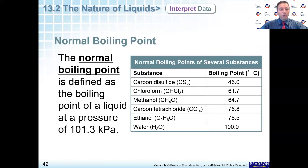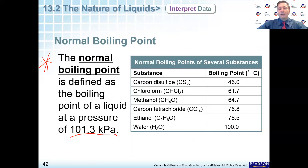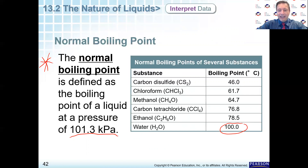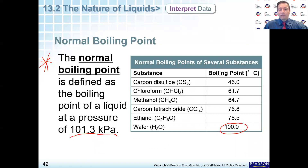Normal boiling point — please get this into your notes. Normal boiling point is at 101.3 kilopascals, or 1.0 atmospheres. Here is the normal boiling point of some substances. Water, which we're very familiar with, is 100 degrees Celsius. You may wonder why it is so high — remember the hydrogen bonding that takes place. That is the attraction of hydrogen to the unshared electron on the neighboring oxygen, which creates a special type of bond called hydrogen bonding.